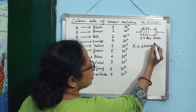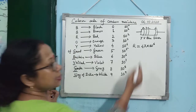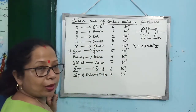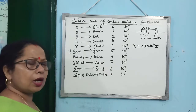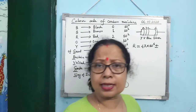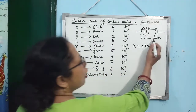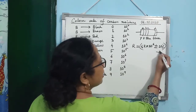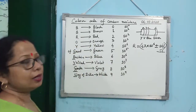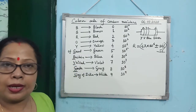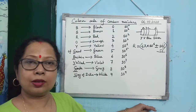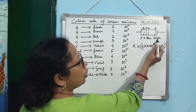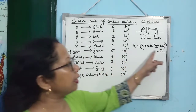Then add the tolerance: D is silver, which means ±10%. So the complete resistance value is 47 × 10⁶ Ω ± 10%. That is the resistance of the carbon resistor. You may also get the opposite kind of question — given the resistance value, find the colors of the rings.